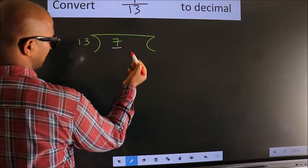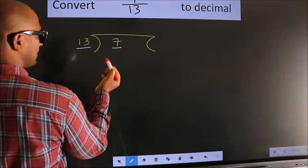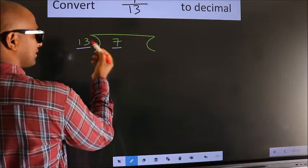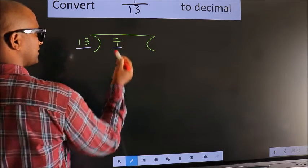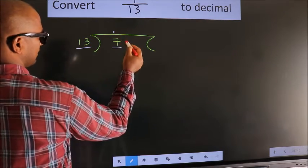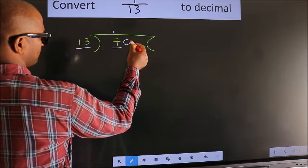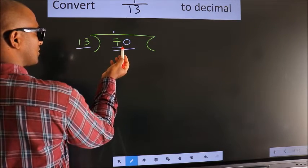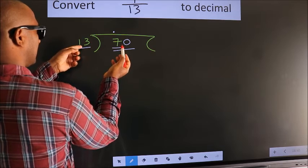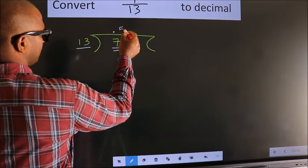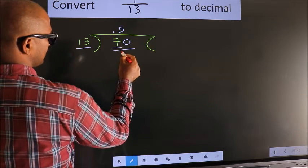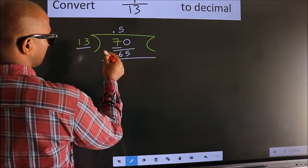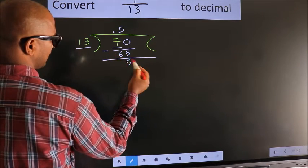Here we have 7, here 13. 7 is smaller than 13, so we should put a dot here and take 0, making it 70. A number close to 70 in the 13 table is 13 fives — 65. Now we subtract and we get 5.